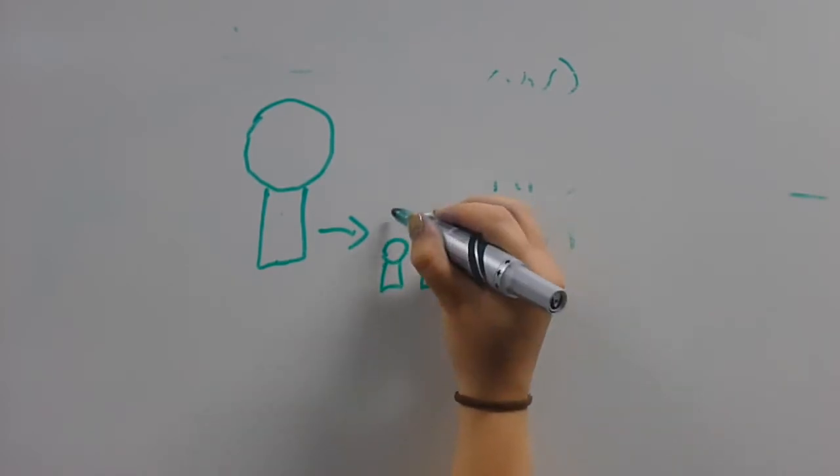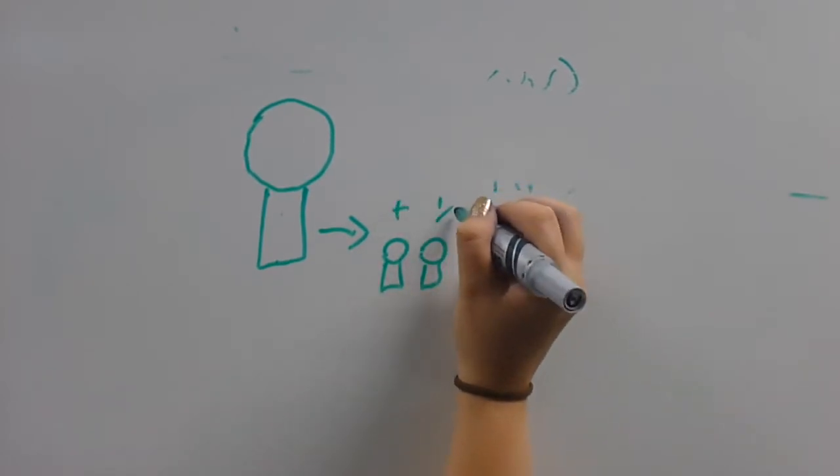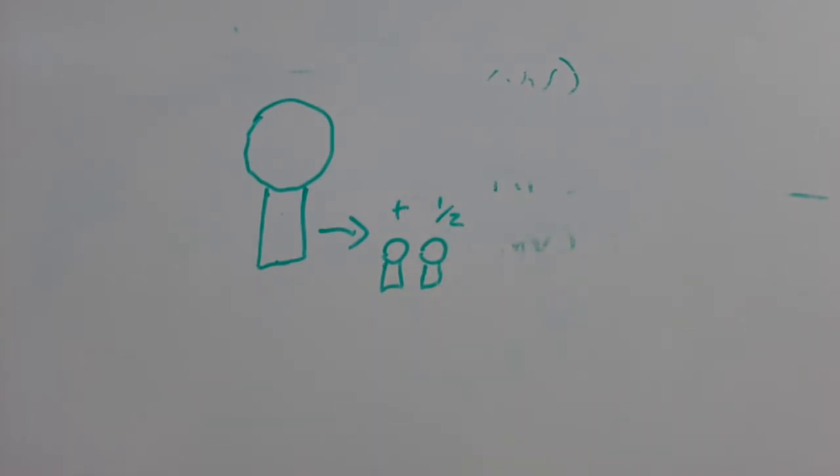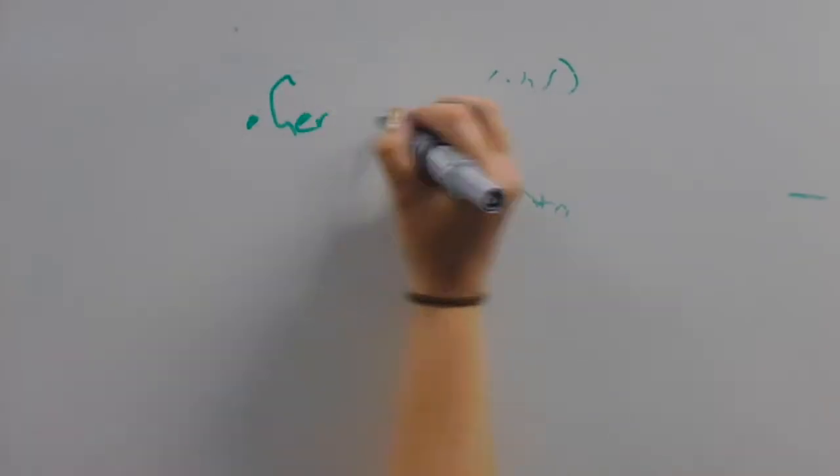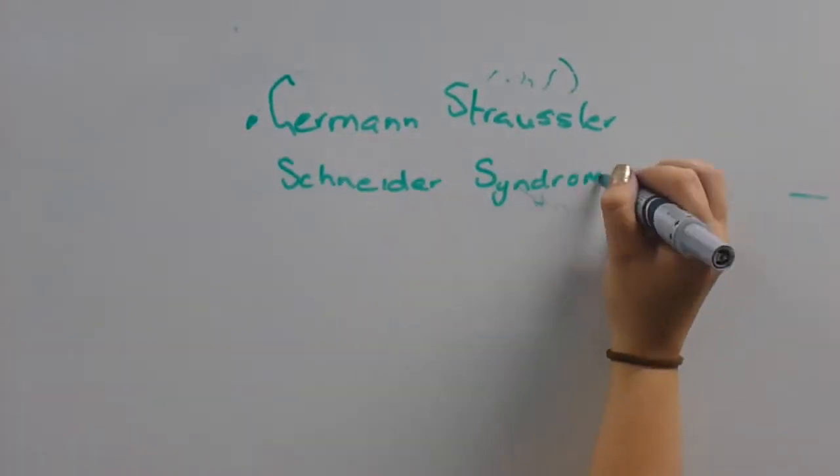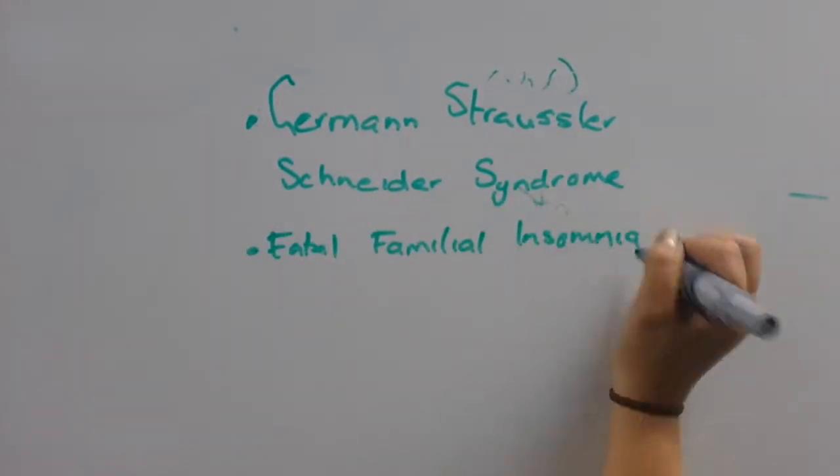If an affected sibling has another sibling, they have a 50% chance of being affected, with onset appearing at a younger age and often having slower progression. This is true for 10-15% of cases. Familial inherited forms include Gerstmann-Strossler-Skenker syndrome and fatal familial insomnia.